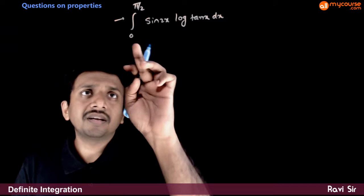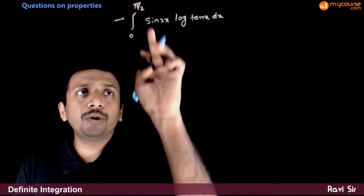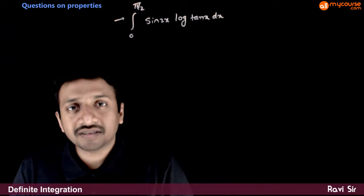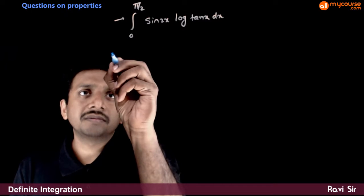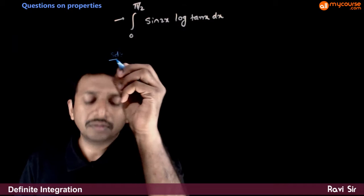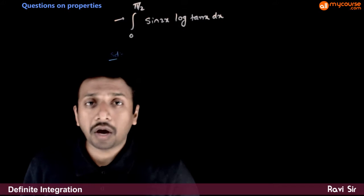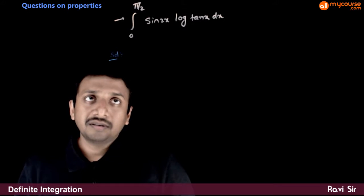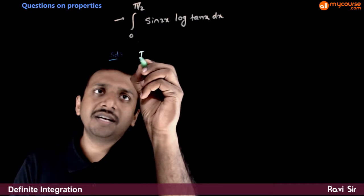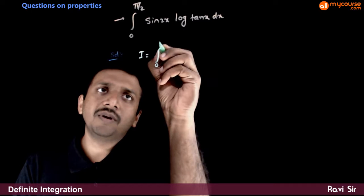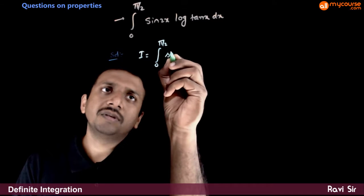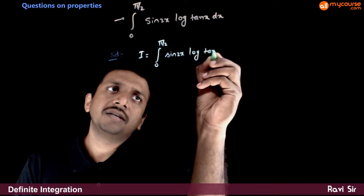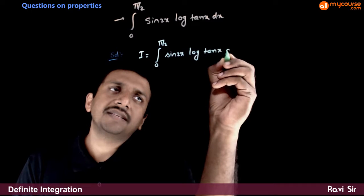The next question is the integral from 0 to π/2 of sin(2x) · log(tan x) dx. Let us consider this integral to be I. So let I equal the integral from 0 to π/2 of sin(2x) · log(tan x) dx.